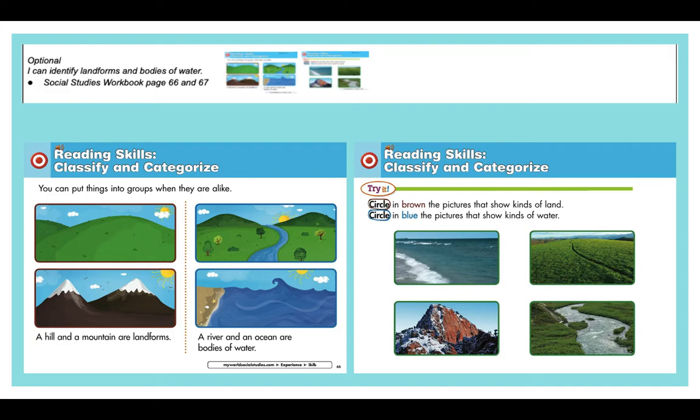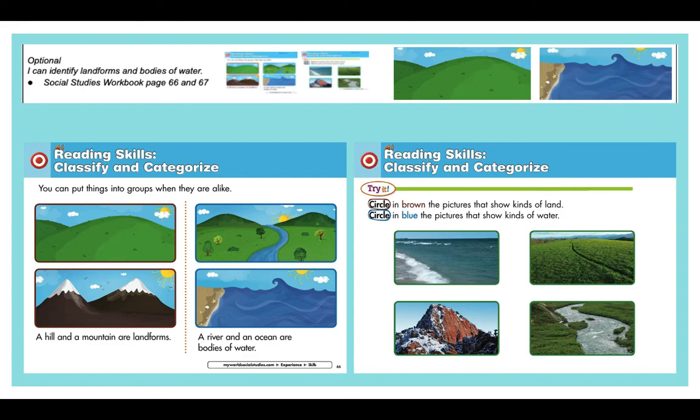So here's what it wants you to do on the next page, page 67. It says circle in brown, the picture that shows kinds of land, and circle in blue the pictures that show kinds of water. So you're going to have pictures of land. You're going to have pictures of water. You're going to take a brown crayon or marker and circle the part that is land, and a blue crayon or marker and circle the part that is water.